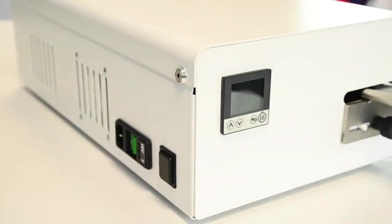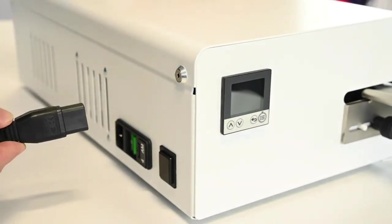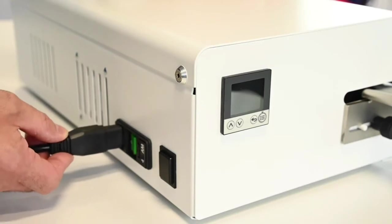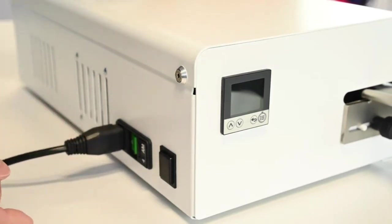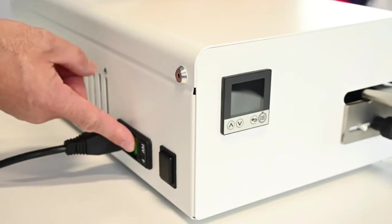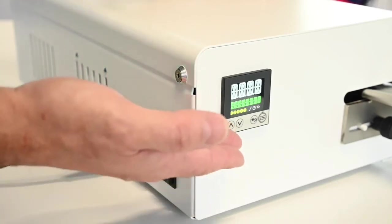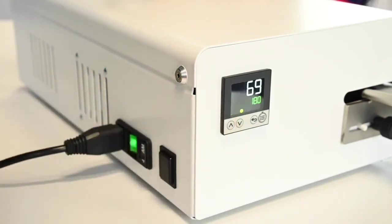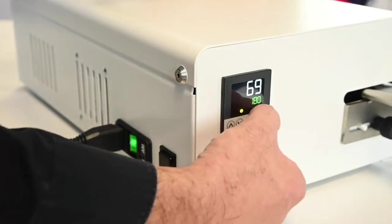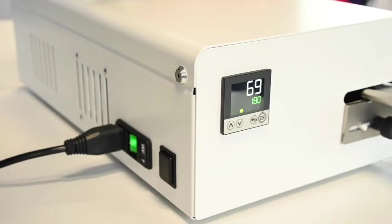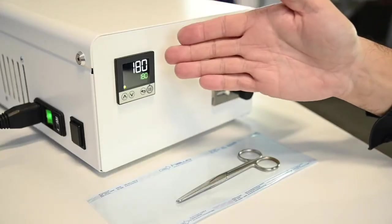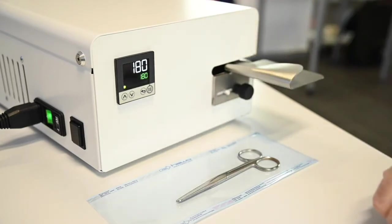For machine installation it is required to have a stable power supply, in our case 230 volts, and then switch the machine on at its main switch. The machine does a short starting sequence and then puts the nominal temperature value, in our case 180 degrees, on display and starts heating automatically.